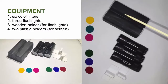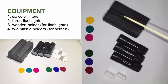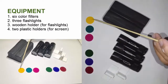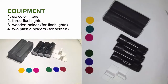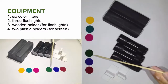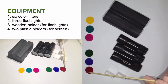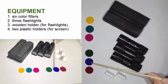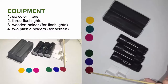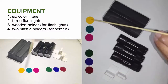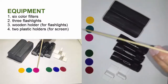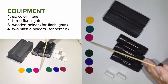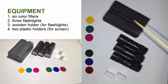The equipment we are going to use in this lab consists of six color filters. We have three primary color filters: green, blue, and red. And then three secondary color filters: yellow, cyan, and magenta.